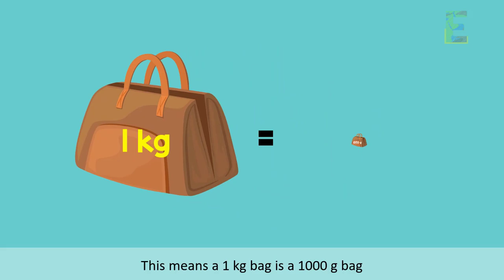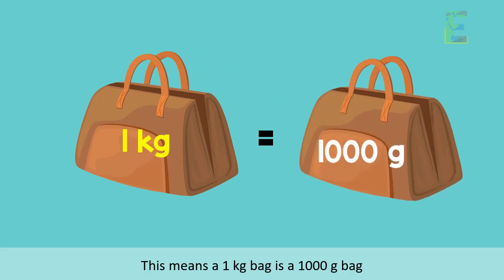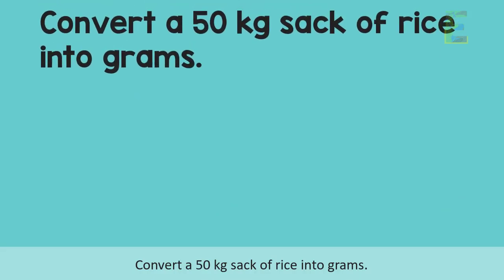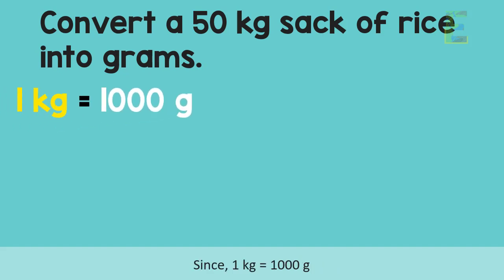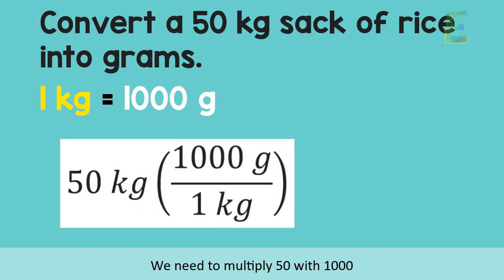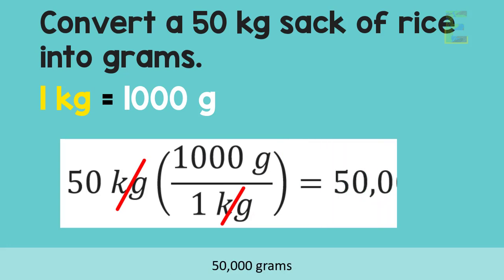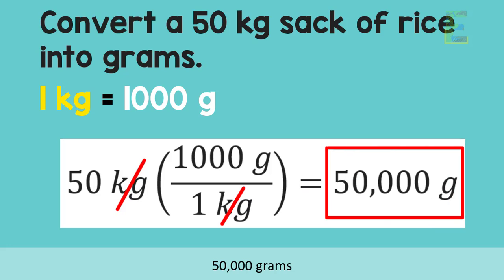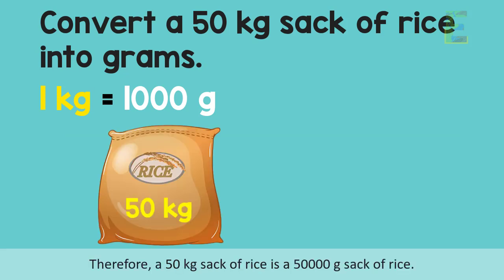This means a one kilogram bag is a one thousand grams bag. Now let's have this problem: convert a 50 kilogram sack of rice into grams. We have 50 kilograms. Since one kilogram is equal to one thousand grams, we need to multiply 50 by one thousand, which gives us the final answer of 50,000 grams.